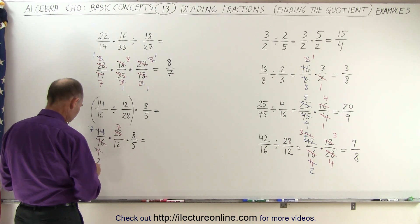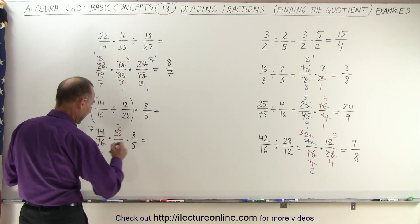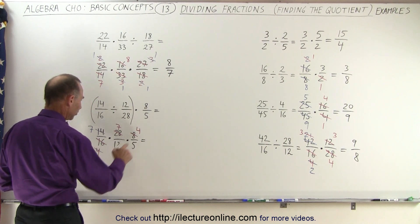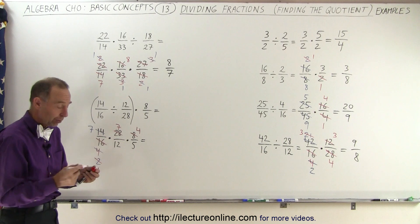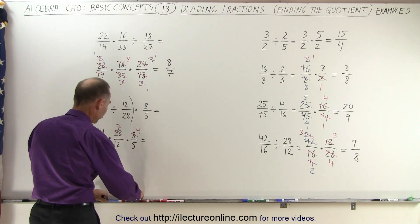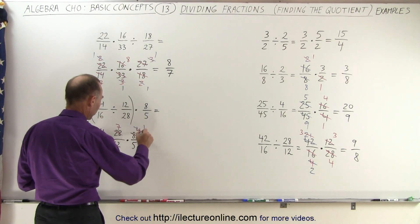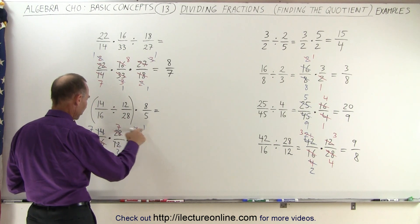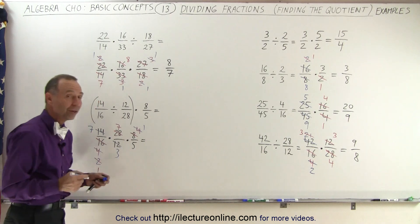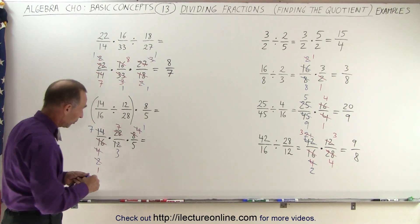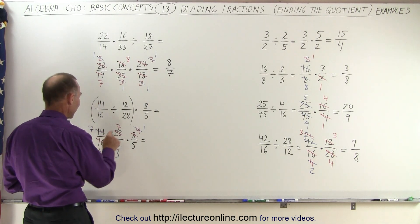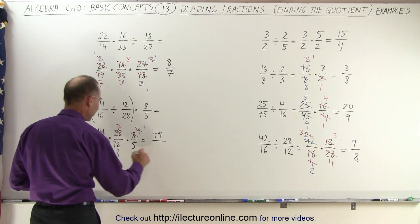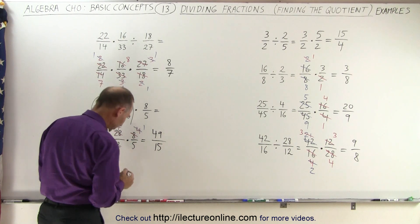Now, we still have a 4 and a 12. They're both divisible by 4. So what we can do now is 4 divided by 4, that's 1, 12 divided by 4 is 3. Now notice we have only prime numbers in the numerator and prime numbers in the denominator, and they're not the same. So we're done. So now we have 7 times 7 times 1, which is 49 in the numerator, divided by 1 times 3 times 5, which is 15 in the denominator.